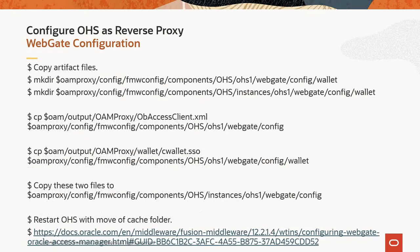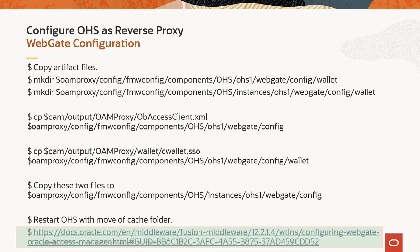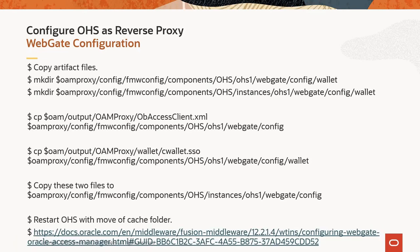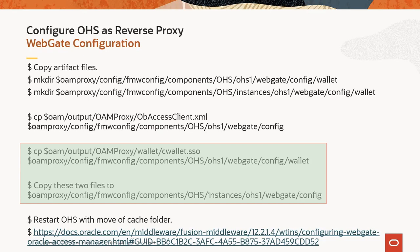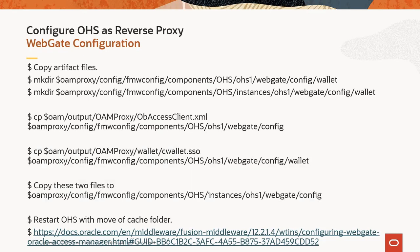These steps show copying artifact files from the OAM server to OHS. The lab uses open mode, so you will only be copying obaccessclient.xml and cwallet.sso. For simple or cert mode, the OAP over REST configuration files to copy will differ — please refer to the link in the slide for more details. Copy files to both staging and runtime directories of the web instance. After copying the new artifact files, stop OHS, move the cache folder, and start it. It is critical to move the cache folder for new webgate changes to take effect.